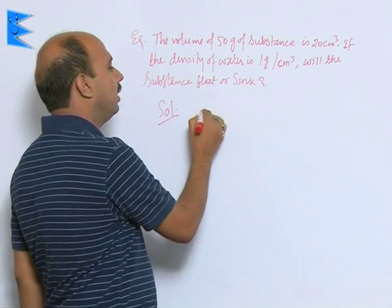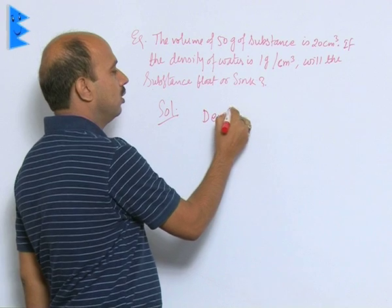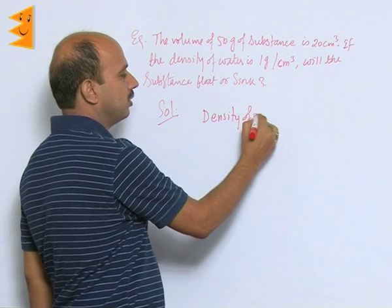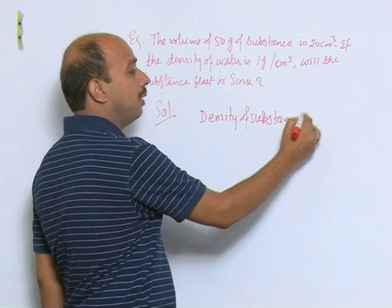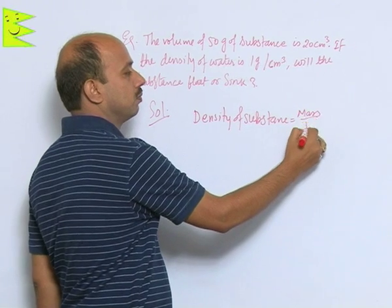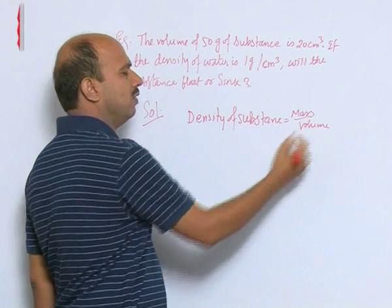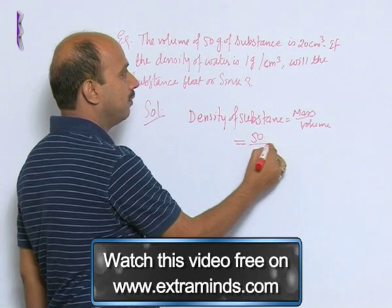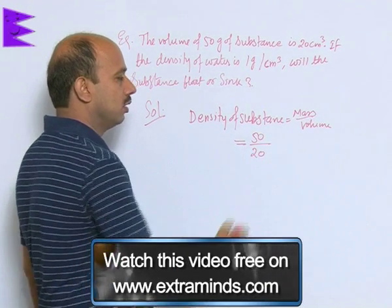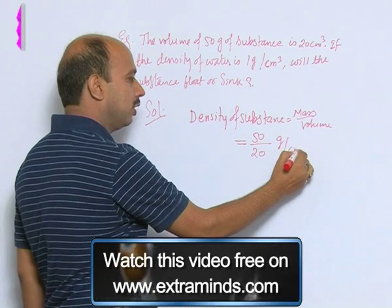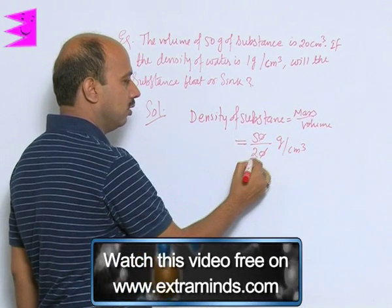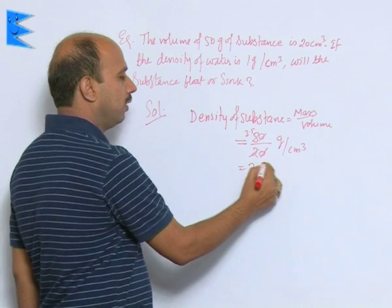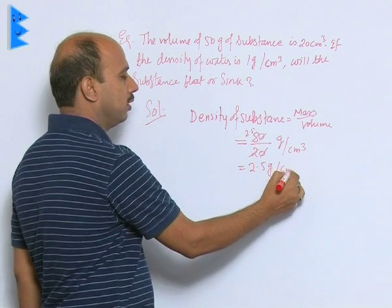How we will calculate density of substance? Density of substance is mass upon volume. Both things are given to you. The mass upon volume, that is 50 gram divided by 20 centimeter cube, that is 2.5 grams per centimeter cube.